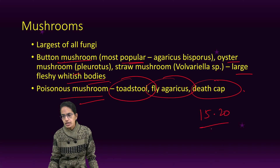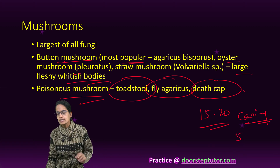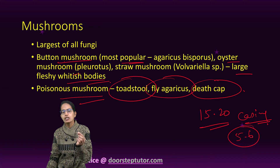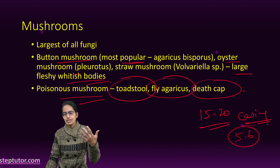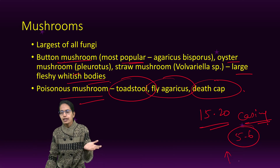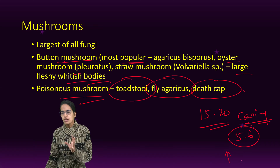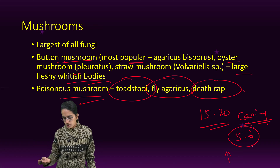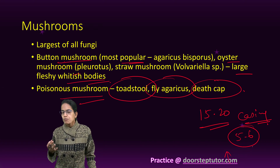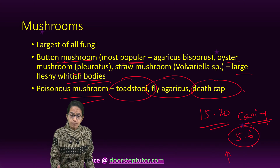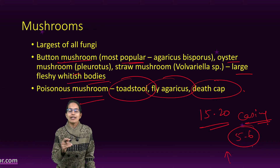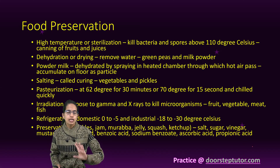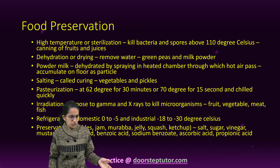After 15 to 20 days of casing, the first crop pinhead is visible. Small buttons start to develop 5 to 6 days after the pinhead stage. Full-grown mushrooms are then harvested, and shelf life is increased by vacuum cooling and freezing, involving ascorbic acid, citric acid, and brine. Mushrooms are rich in protein — about 15% protein — and rich in vitamin B and E.